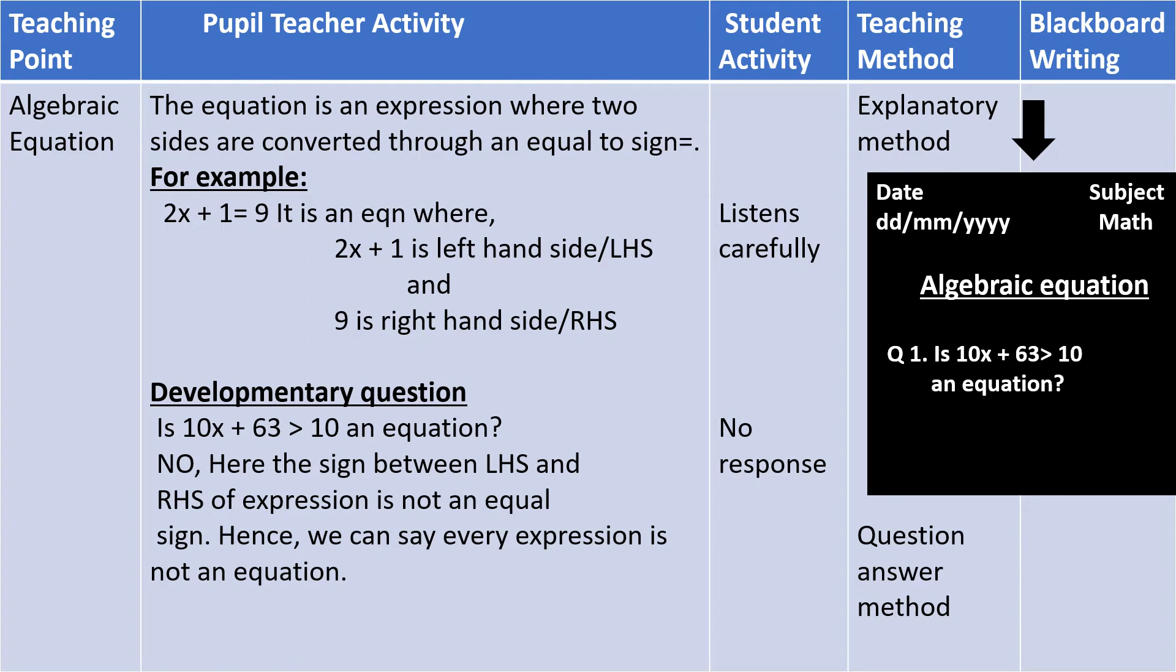Make four columns. The first one is Teacher's Point, after that keep in Teacher Activity, and then Student Activity. In the end, Blackboard Writing.